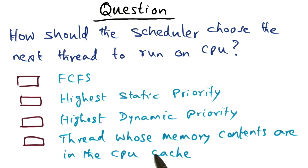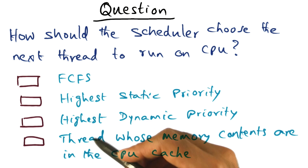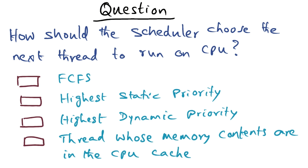And the fourth choice is it's going to pick a thread whose memory contents are likely to be in the cache of the CPU. So these are the four choices, and I want you to think about it and come up with some thoughts as to what might be the right thing that the scheduler might do in picking the next thread to run.